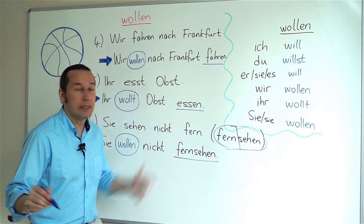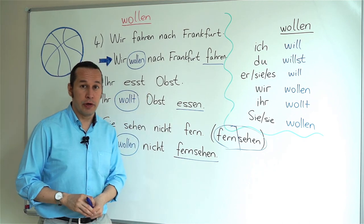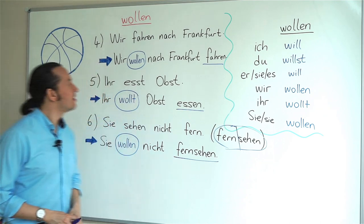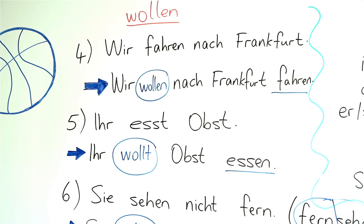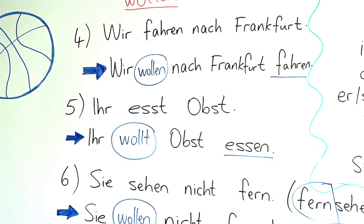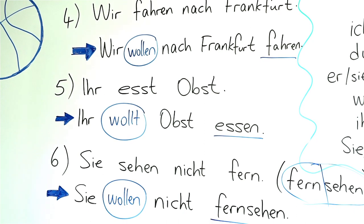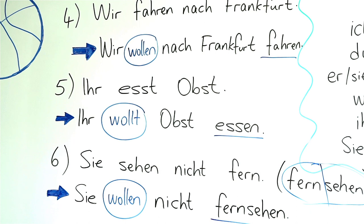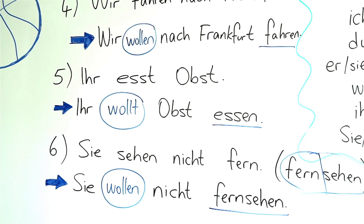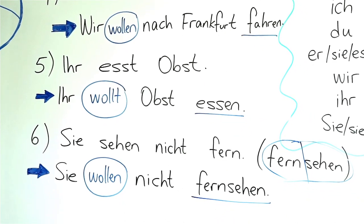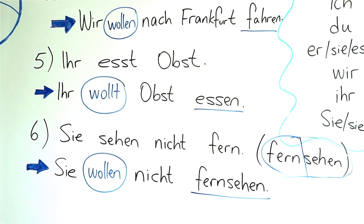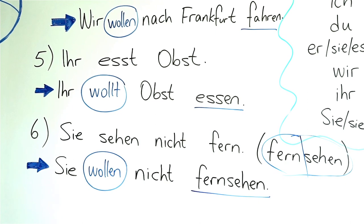I want you to repeat after me, please, these sentences with the accurate German accents. Wir wollen nach Frankfurt fahren... ihr esst Obst... ihr wollt Obst essen... sie sehen nicht fern... sie wollen nicht fernsehen.